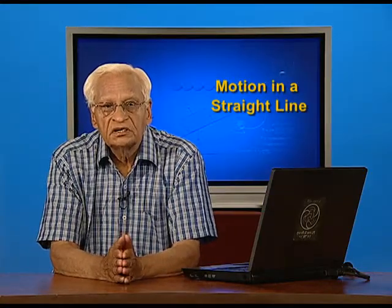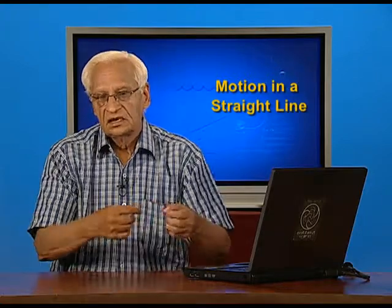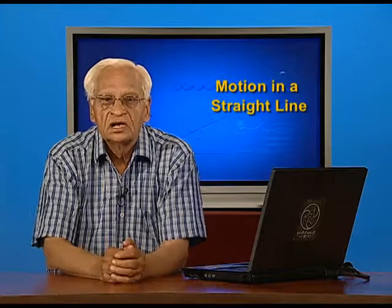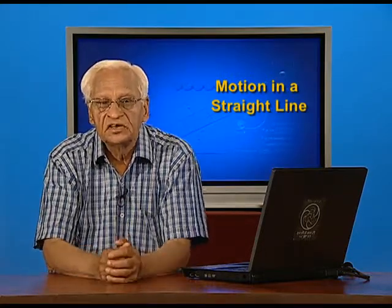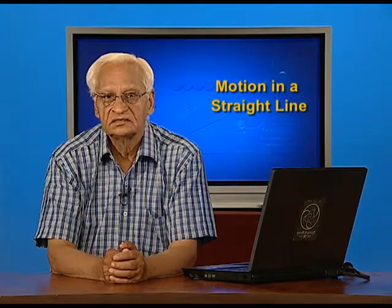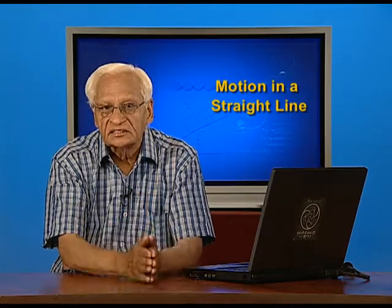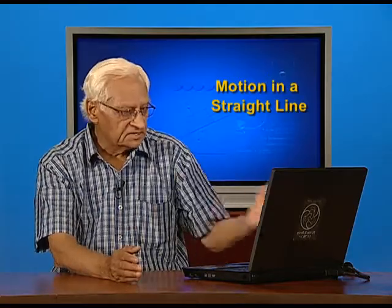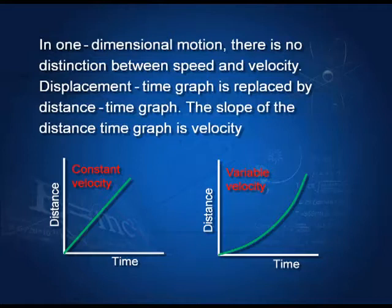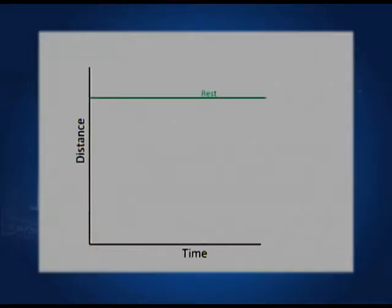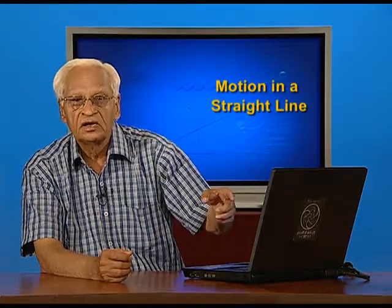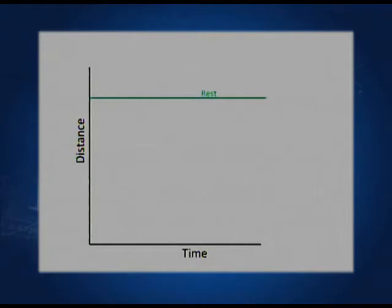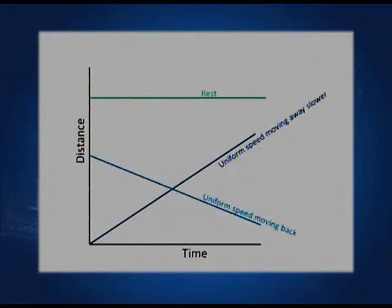Now we are ready to consider motion in one dimension. In one dimension, since the body moves along only one line, there is no need to distinguish between distance covered and displacement. Therefore, we shall now use a distance-time graph rather than a displacement-time graph. If the graph is linear, velocity is constant; if non-linear, velocity is variable. Various graph shapes illustrate different situations: a horizontal line means the body is at rest; a positive slope means moving away with uniform speed; a negative slope means coming towards us, so velocity is negative.